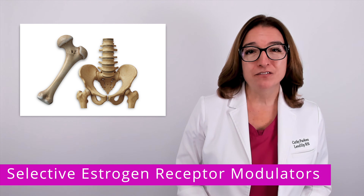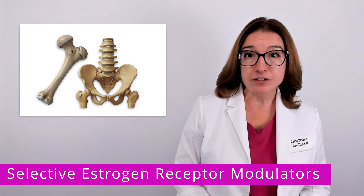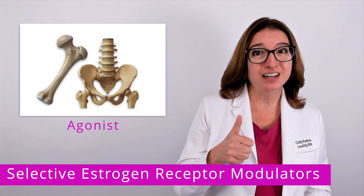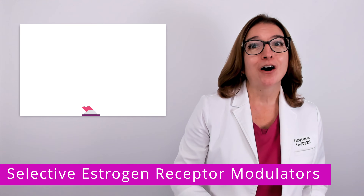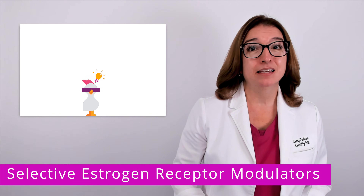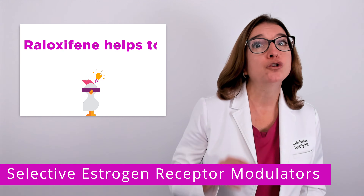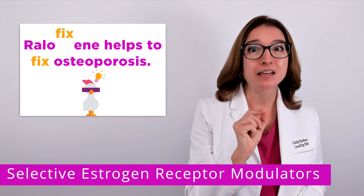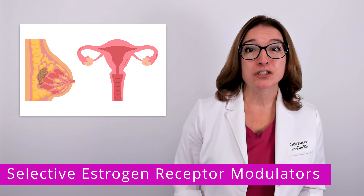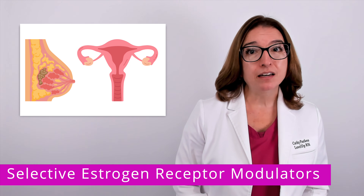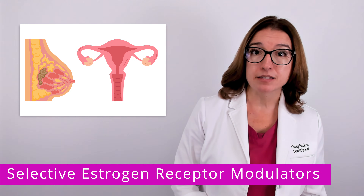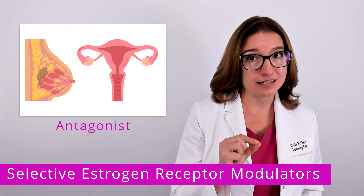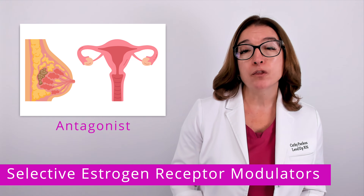In terms of raloxifene's mode of action, raloxifene binds to estrogen receptors in the bone acting as an agonist, which increases bone formation and decreases bone resorption. A helpful hint to remember this is that "fix" is spelled backwards in raloxifene — raloxifene helps to fix osteoporosis. In addition to binding to estrogen receptors in the bone, raloxifene also binds to estrogen receptors in the breast and uterus, where it acts as an antagonist and blocks the effect of estrogen on those specific tissues.